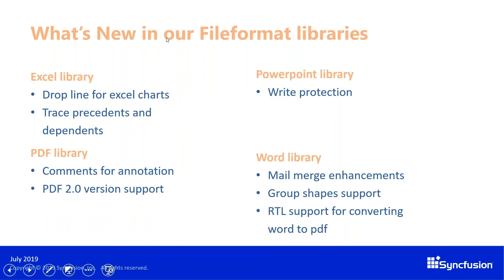I'd also like to talk about what's new in our file format libraries. In Excel, we've provided drop line Excel charts — a line rendered vertically towards the X-axis to showcase the exact data value — and also provided trace precedents and dependents methods to get precedent and dependent values. The PDF library now supports version 2.0 and you can add comments for annotations. The PowerPoint library has write protection, and the Word library has mail merge enhancements — you can draw shapes in Word, group them, and convert Word to PDF in RTL.